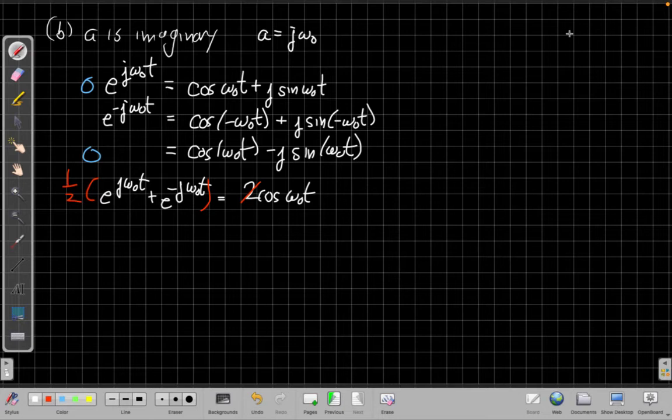I could do a similar thing for the sine. If I take the first equation and subtract the second equation from it, the cosines will cancel out, and I'll be left with 2j sine.